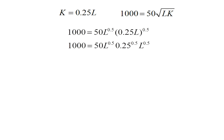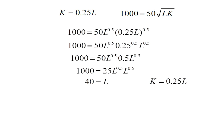I'm bringing the 0.5—that's the exponent on the 0.25L—in on the 0.25 and in on the L. Working through the math, I end up with labor as 40 units and capital as 10 units. So these are the cost-minimizing combinations of labor and capital given this particular wage and rental rate, and that this firm has to produce 1000 units of output.